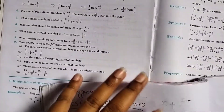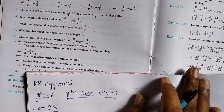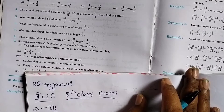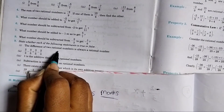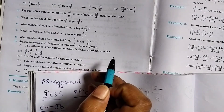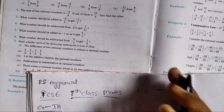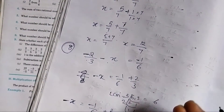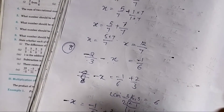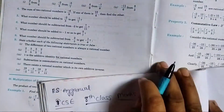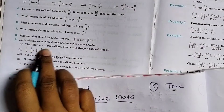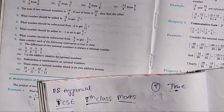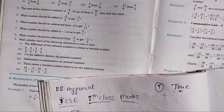Now the 9th question. First statement: the difference of two rational numbers is always a rational number. We have subtraction of two rational numbers — the answer is true or false. When we subtract two rational numbers, the result is always a rational number. So the answer is true — this is a true statement.